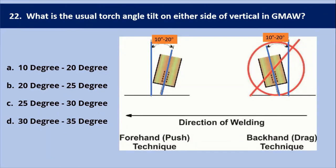This is the last question: what is the usual torch angle tilt on either side of the vertical in GMAW? From the diagram, the inclination on the vertical side on either side is 10 to 20 degrees. So the answer is A: 10 to 20 degrees can be tilted on either side of the vertical in GMAW. Thank you friends.